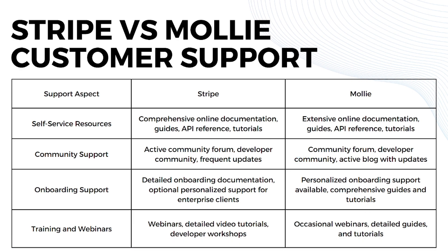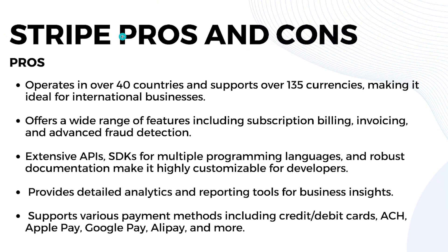Now let's discuss the pros and cons, starting with Stripe. Stripe's pros: it operates in over 40 countries and supports over 135 currencies, making it ideal for international businesses. It offers a wide range of features including subscription billing, invoicing, and advanced fraud detection. It has extensive APIs and SDKs for multiple programming languages with robust documentation, making it highly customizable for developers.